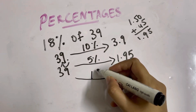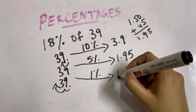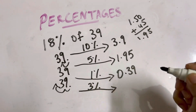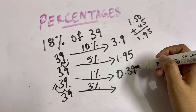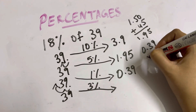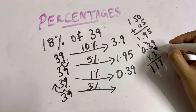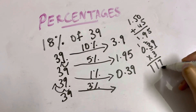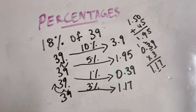1% of 39: place the decimal and move two slots towards the left, giving 0.39. For 3%, multiply 3 by 1%: 3 times 0.39. Since 3 times 9 is 27 and 3 times 3 is 9, that gives 1.17. There are two digits after the decimal, so the answer is 1.17.